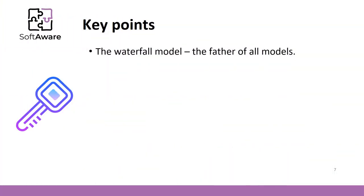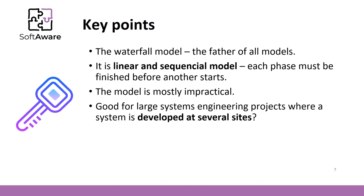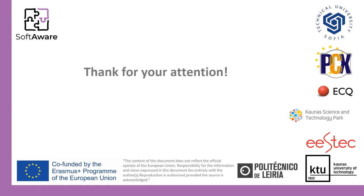To conclude, the model is rarely used nowadays, but it is called the father of all models, and it is necessary to understand this simple model before studying others. The waterfall is a classic example of a linear sequential model — each phase must be finished before another starts. The model is mostly impractical: domain, technologies, and requirements must be well known before the project starts. It is not flexible and lacks customer involvement. Some researchers and practitioners suggest that this model can at least partially be used for large system engineering projects where a system is developed at several sites, as the plan-driven nature helps coordinate the work.